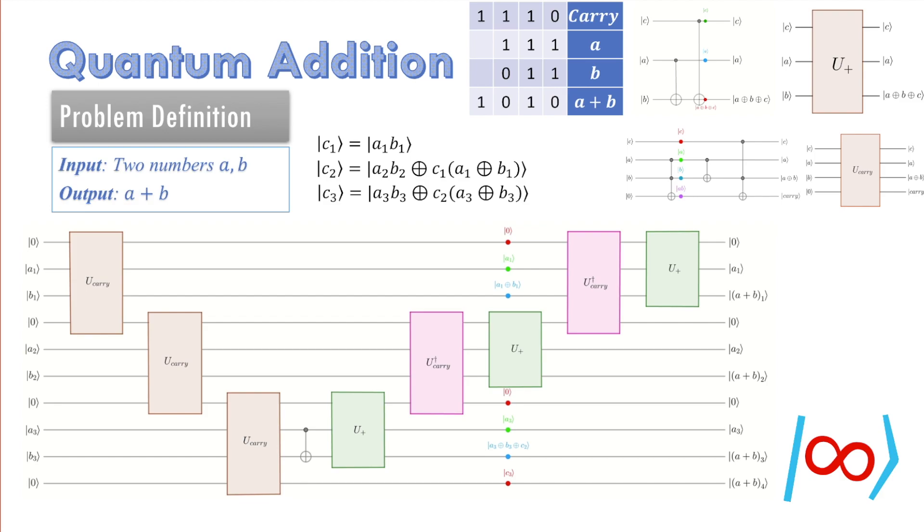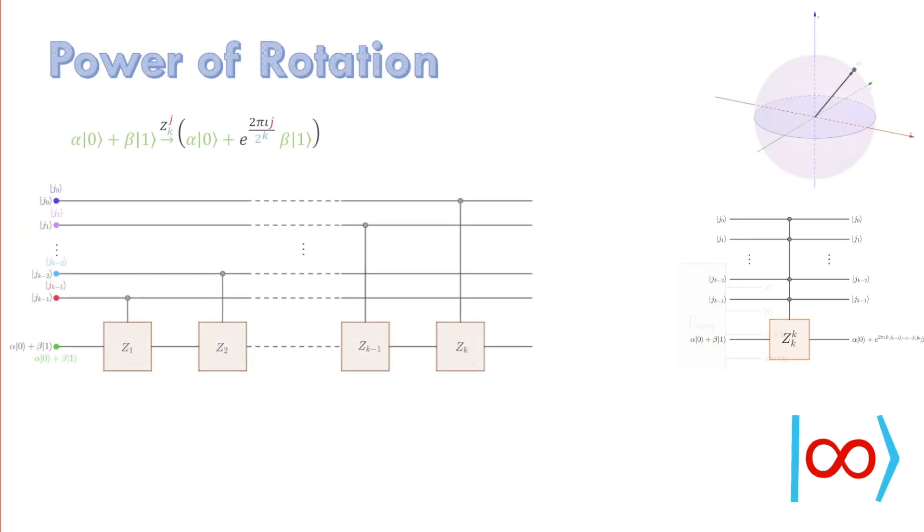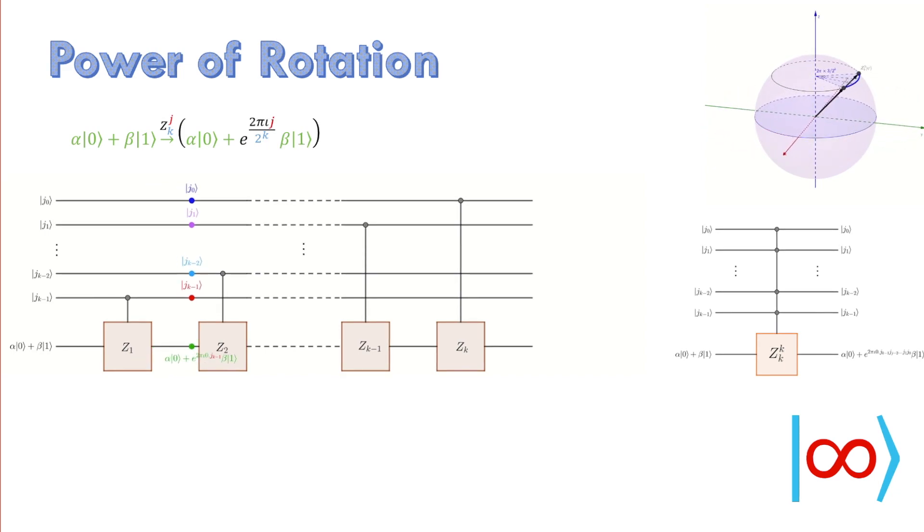Let us first review some of the concepts developed in the 5th video on quantum Fourier transform. Rotations will play important role in many algorithms that will be described in this series. As we described, zk does rotation about z axis by an angle 2 pi by 2 power k.